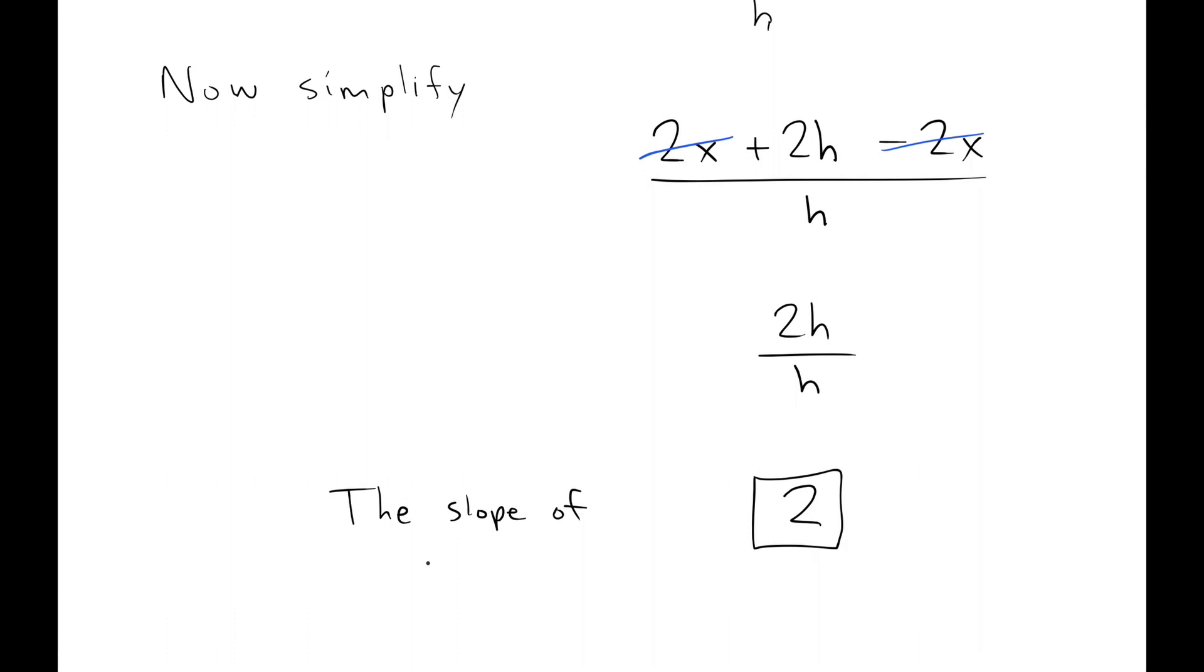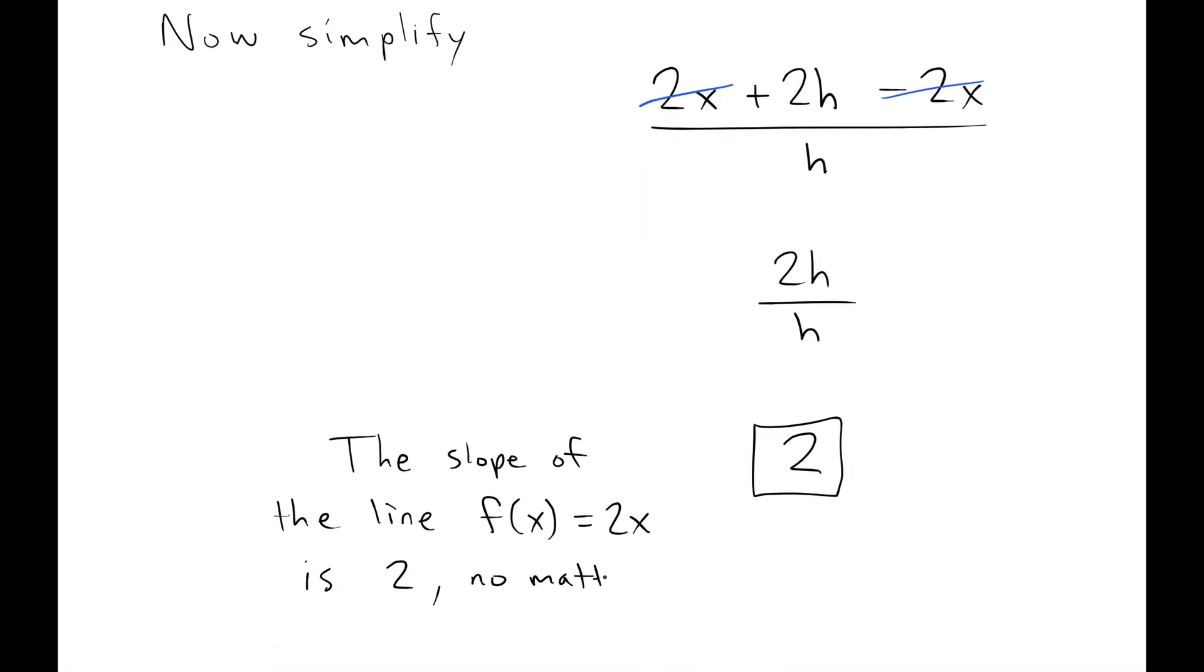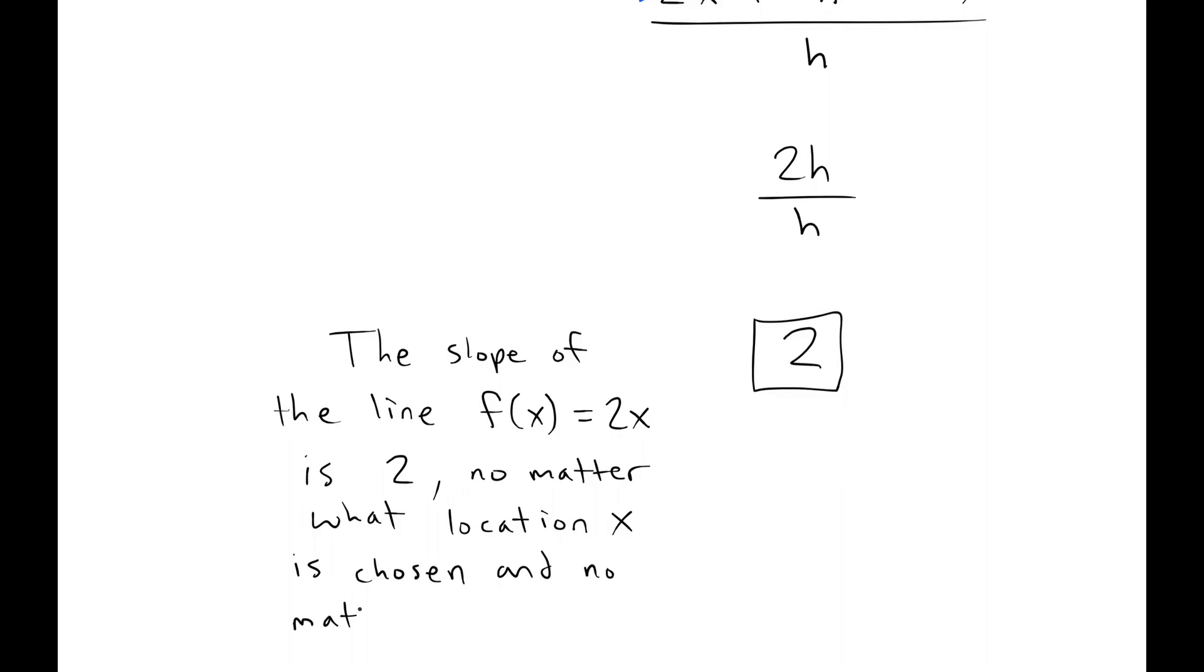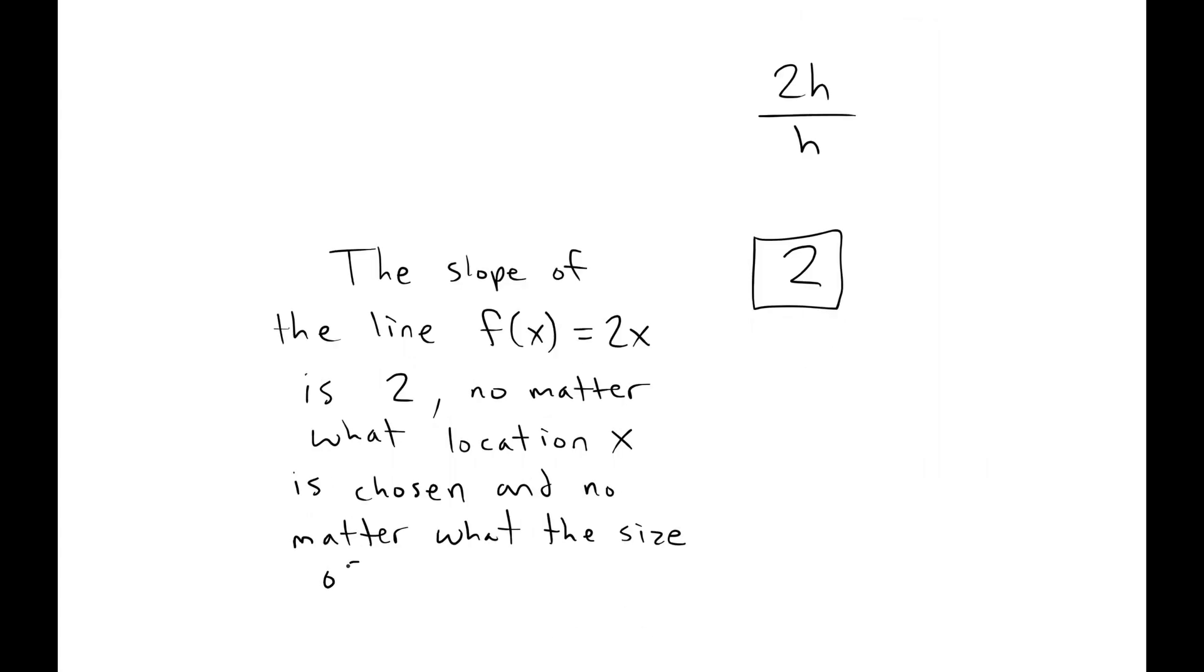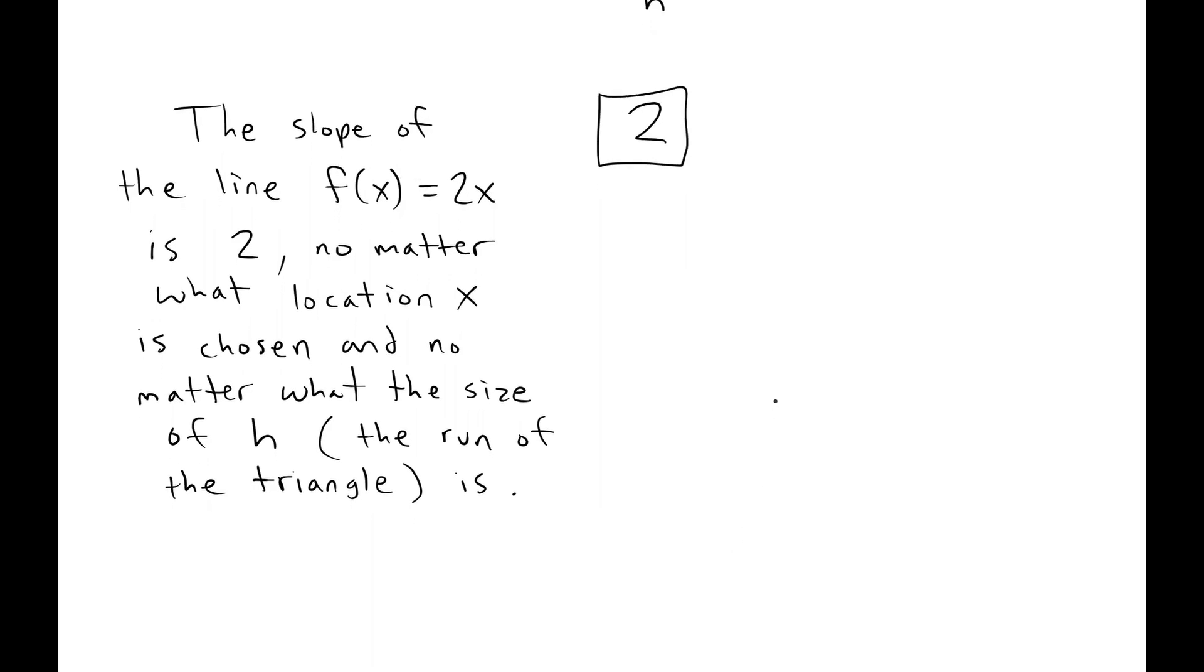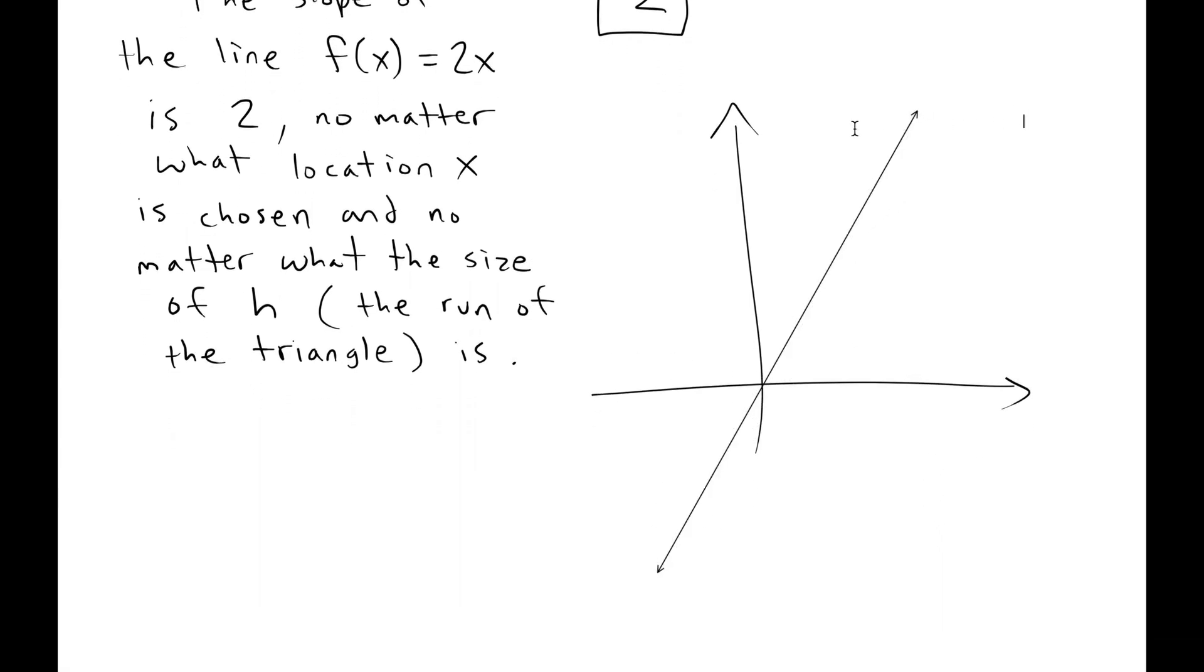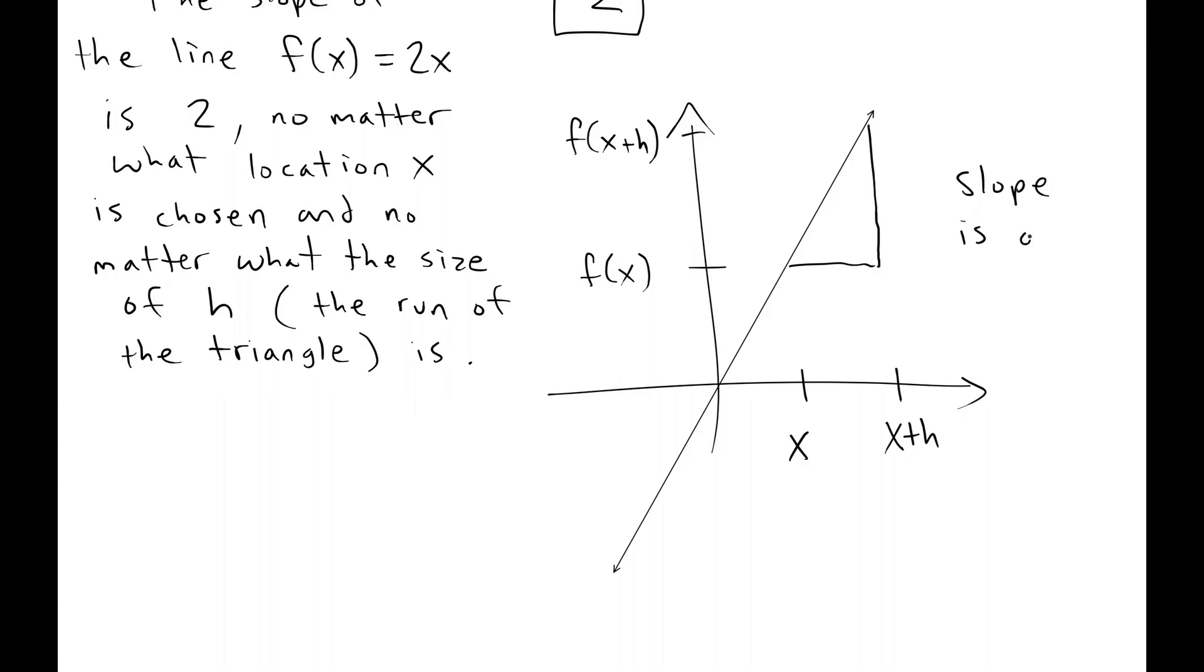The slope of the line f(x) equals 2x is 2 no matter what location x is chosen, and no matter what the size of h the run of the triangle is. So that's a pretty profound statement and a pretty profound result. What it means is that if you have the line y equals 2x, the result of this shows that you could pick any number for x and any size of h. And if you were to calculate the slope using a triangle like this, the thing is going to have a slope of 2 no matter what is what that says. Slope is always 2.